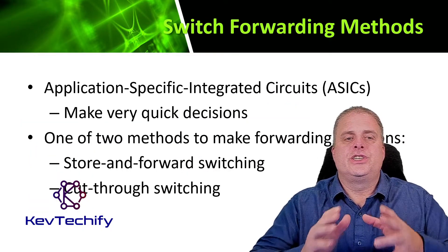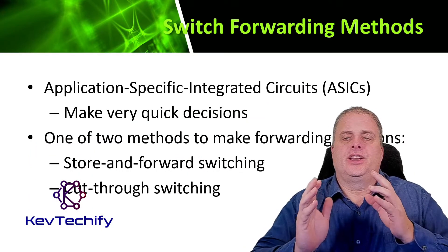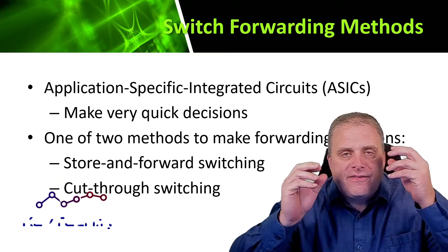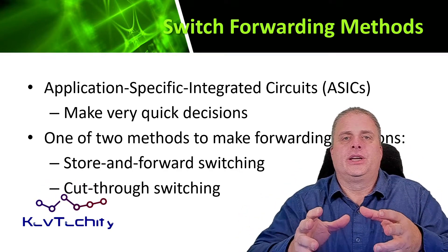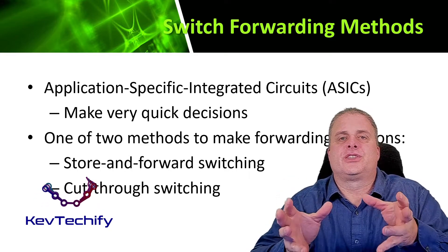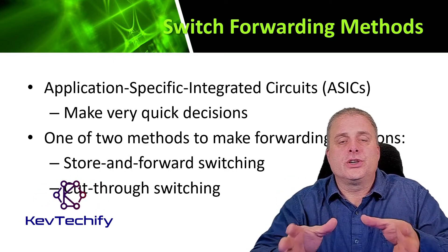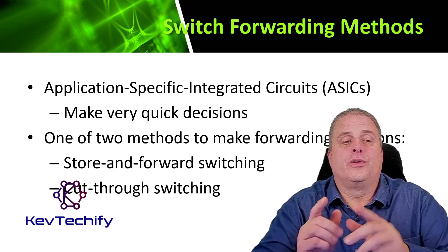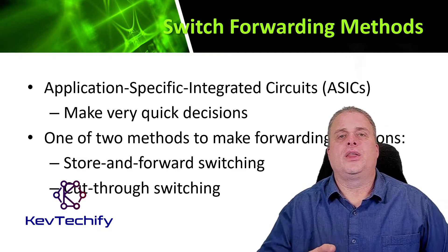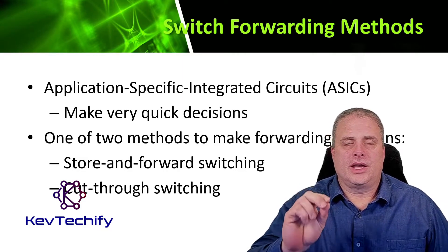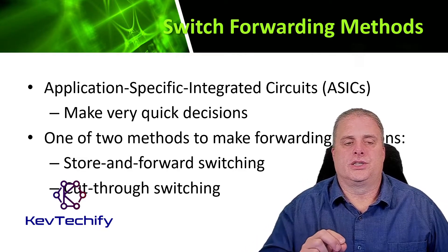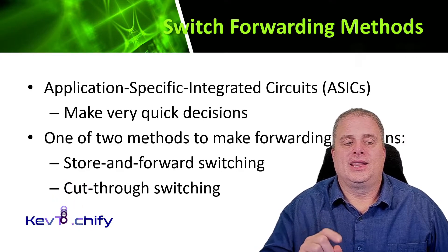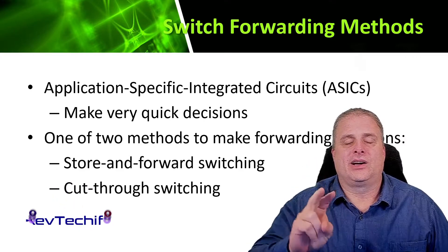Switches use application-specific integrated circuits, or ASICs, to make very quick decisions. Those are specially built circuits designed to perform a specific function — in this case, to forward frames. There are two methods that switches use to make forwarding decisions: one is the store and forward method, and the other is the cut-through method.